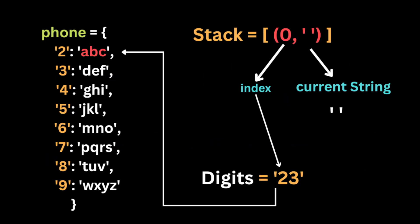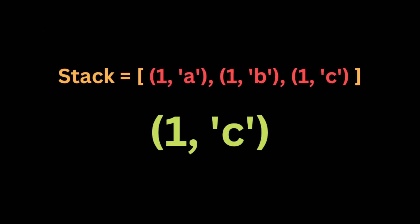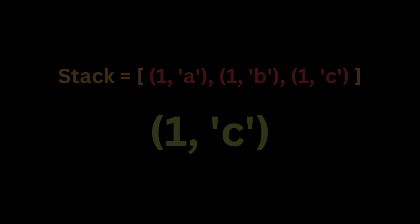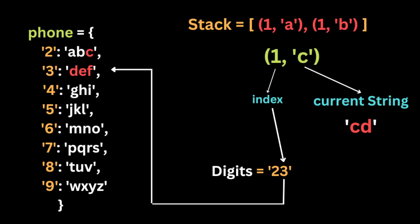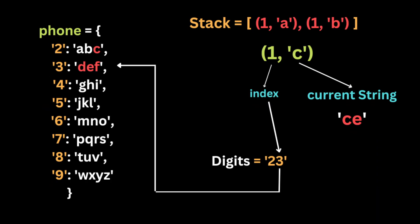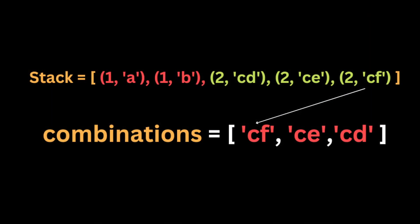After that, we start iterating over the letters inside the first digit. At each index of the stack we push a tuple containing an incremented index and the letter added to the current string. This is the stack we will have at the end of the iteration. Then we start popping the last tuple from the stack and begin iterating through the second digit, adding a tuple containing the index incremented by one and the current string plus the current letter at each iteration.